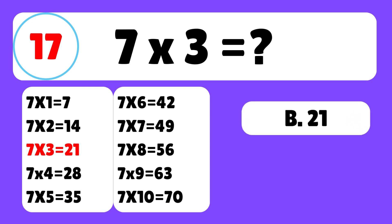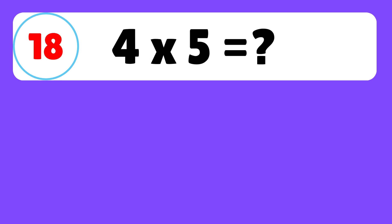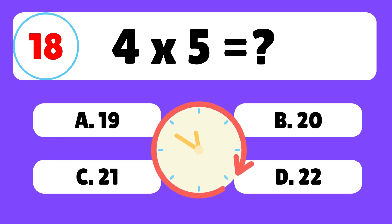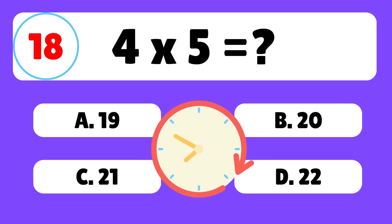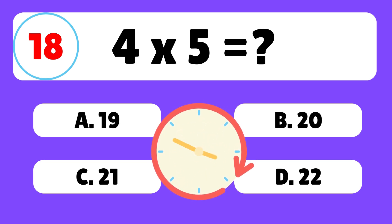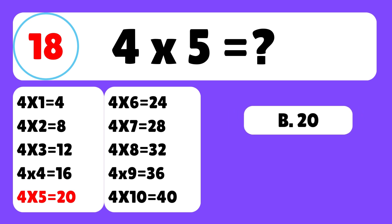Question 18. What is 4 times 5? The correct answer is B. 4 times 5 is equal to 20.